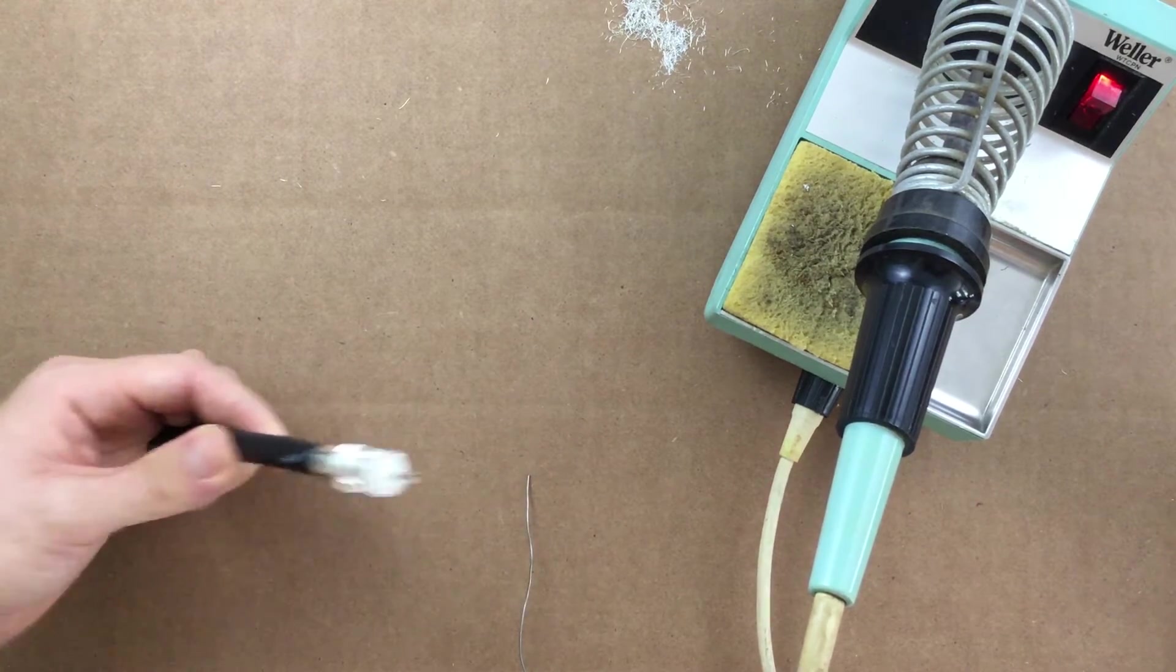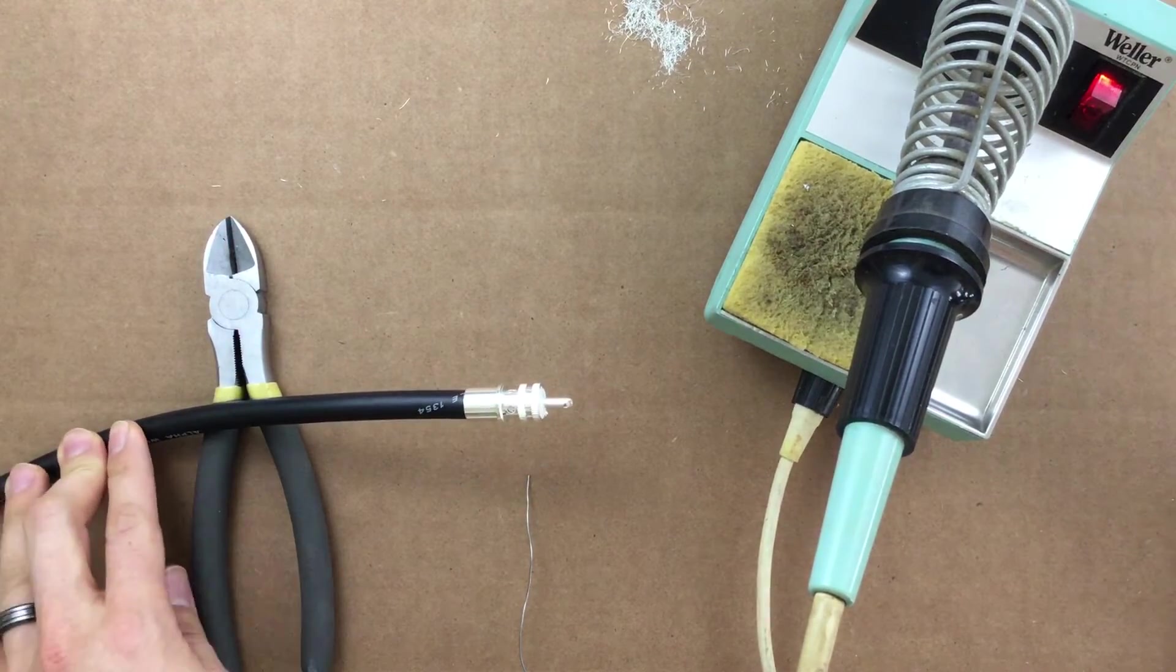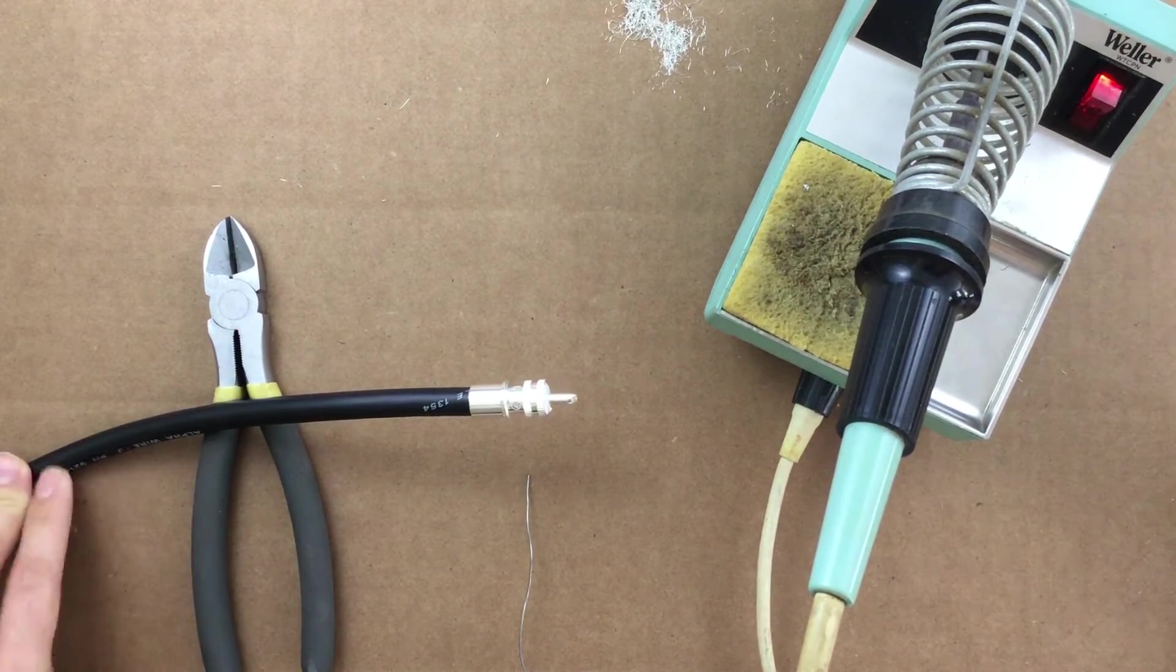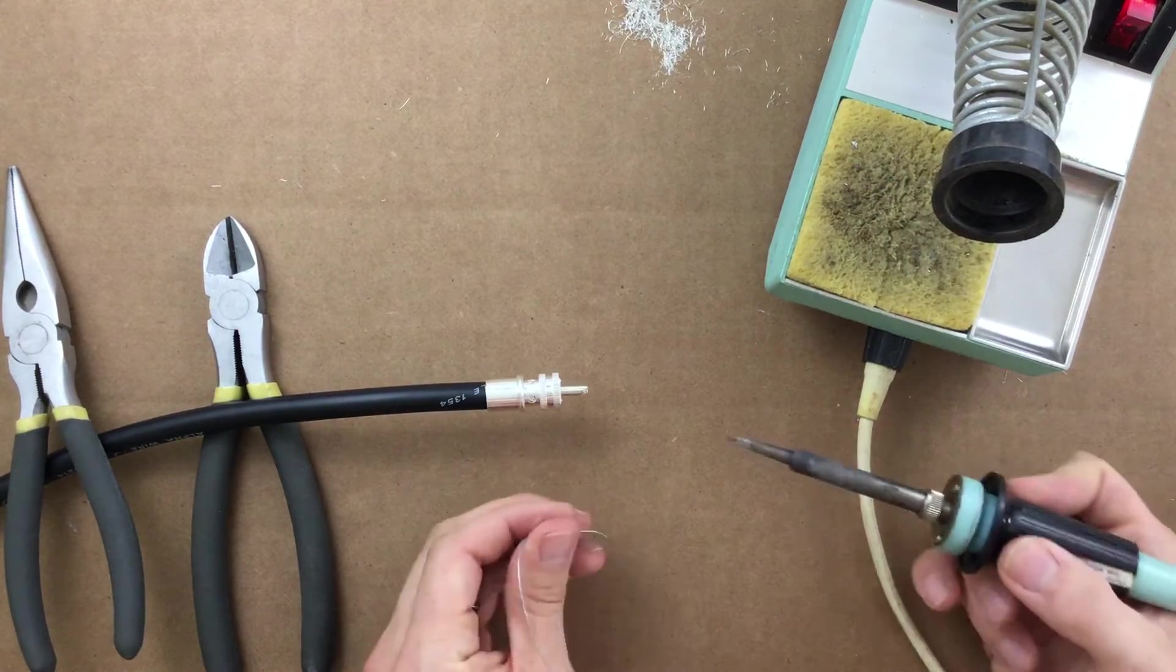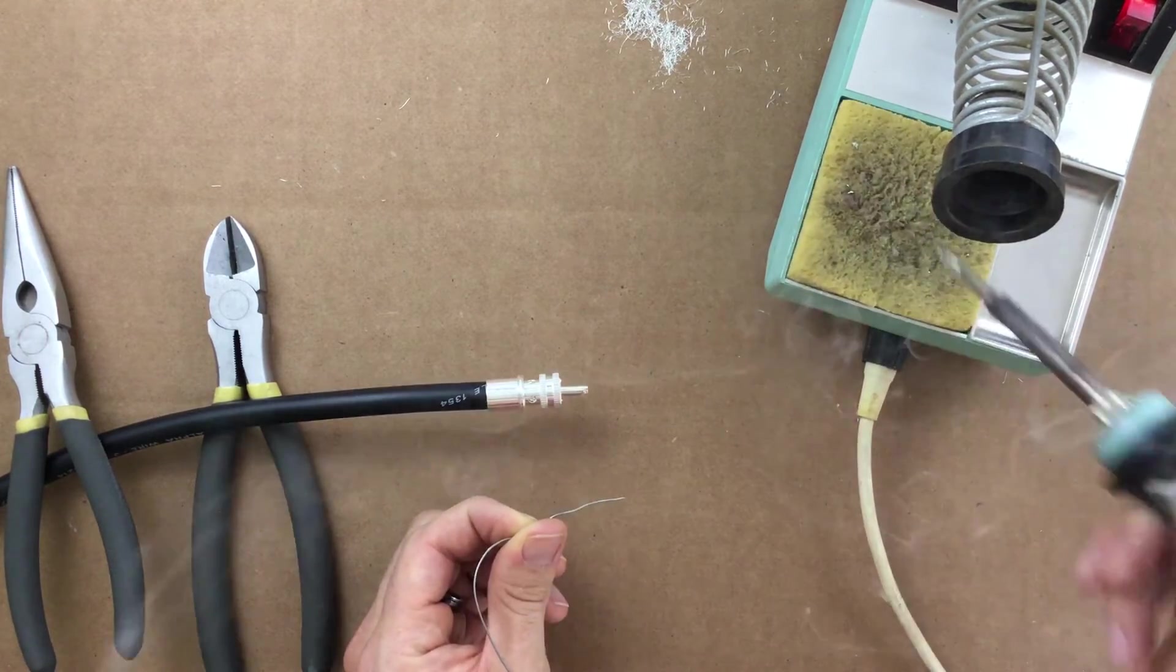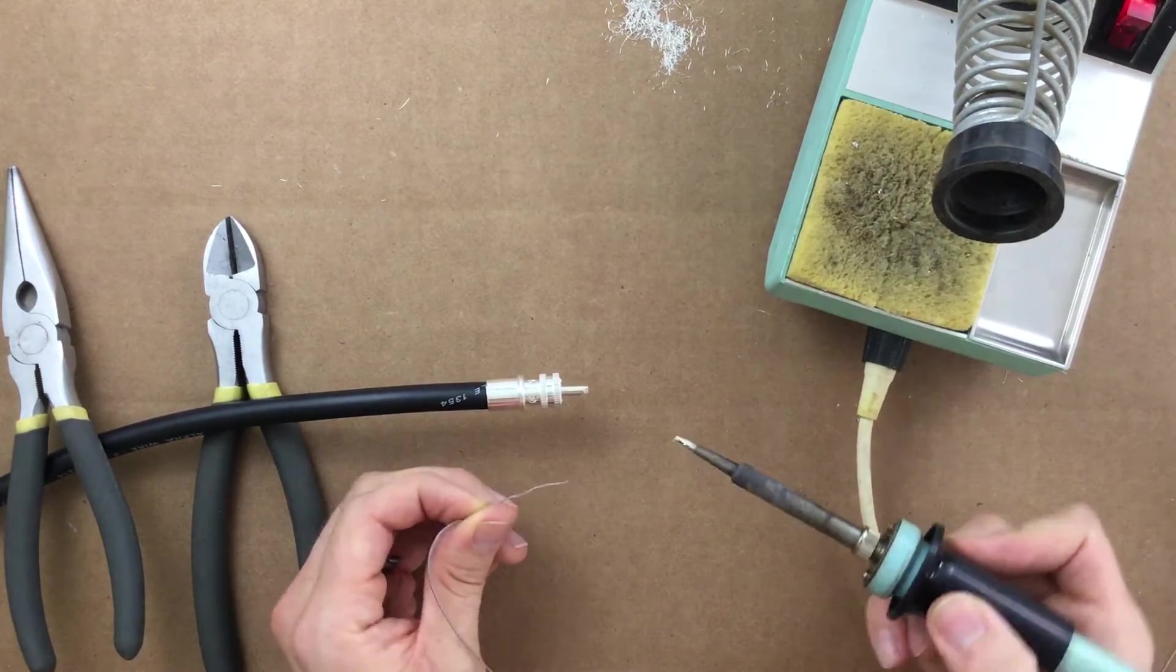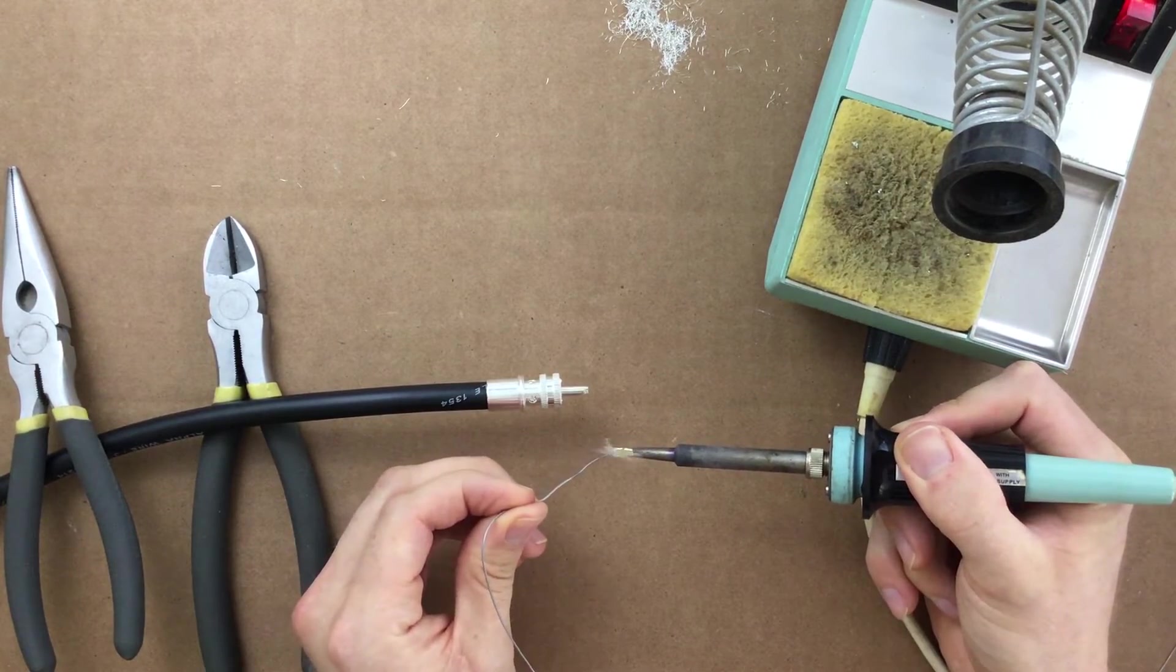Make sure you have a safe place to solder. I am using a larger pair of diagonal cutters to elevate the work. When you start soldering, be sure to tin the iron. Place a small amount of solder back onto the tip of the iron and wipe off both sides.